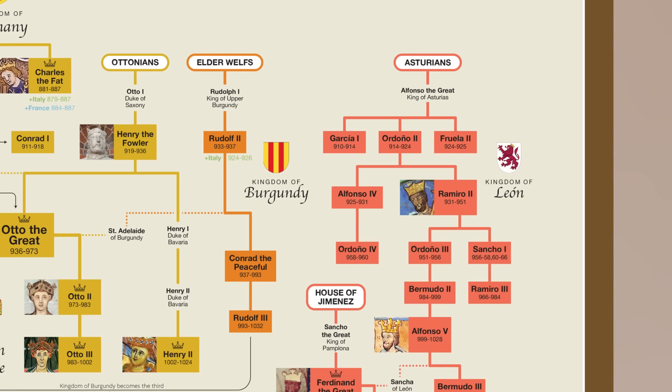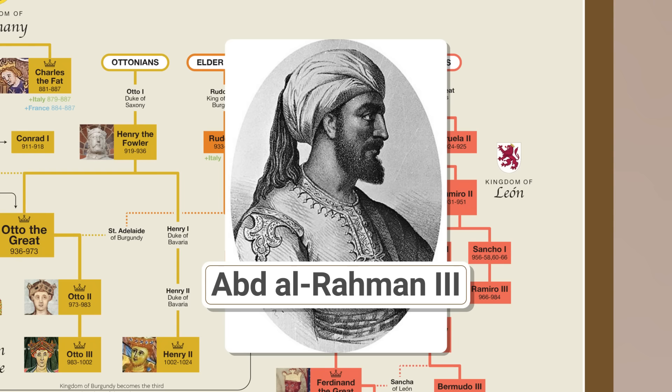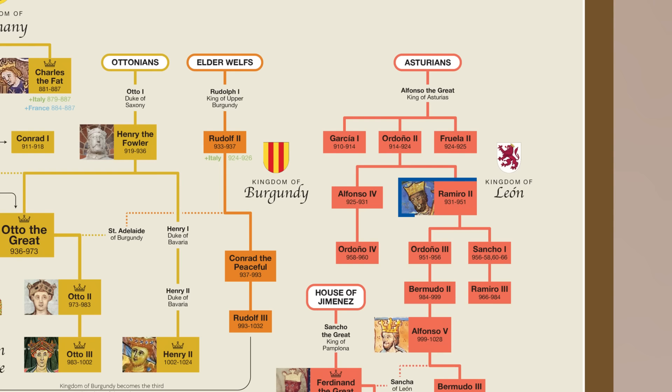In 912 CE, the troubles of the Umayyad emirate were brought to an end by the famous Emir Abd al-Rahman III. During his reign, the Emirate of Cordoba, later known as the Caliphate of Cordoba, hit its peak. Alfonso's grandson, Ramiro II, defeated Abd al-Rahman III in the Battle of Simancas in 939, thereby putting a check on Abd al-Rahman's northward expansion.